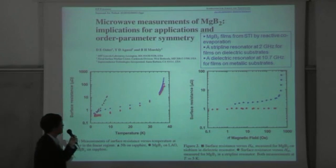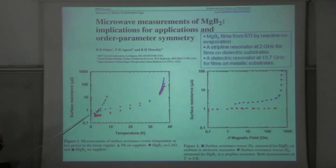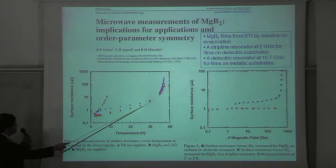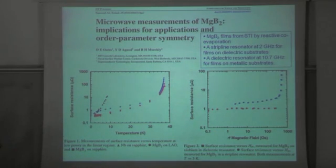And actually there are real data that's measured by Dan Oates at MIT Lincoln Lab using the stripline resonator technique at 2 gigahertz. So this is the data that they put together comparing the niobium film that they have deposited with the magnesium diboride films. Those are provided by ICT, Brian McCleary. So you can see that the surface resistance is, of course, lower in all these temperatures above 4K. And in this particular case, it's comparable to niobium at 4K.